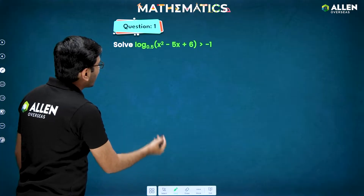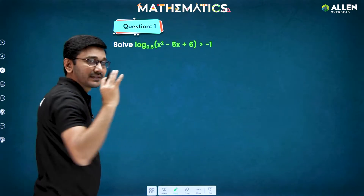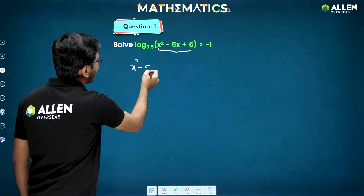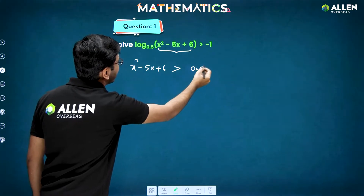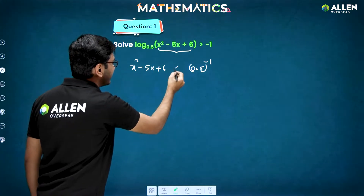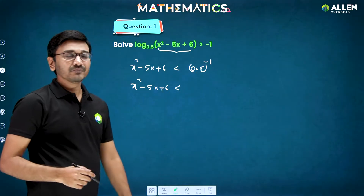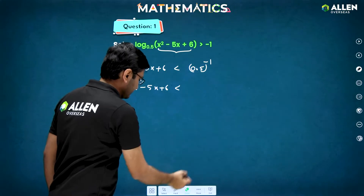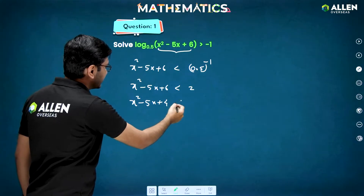First question: log of (x² − 5x + 6) to base 0.5 is greater than −1. Converting to exponential form — since base 0.5 is between 0 and 1, the inequality sign reverses. So (x² − 5x + 6) is less than 0.5 raised to −1. Since 0.5 = 1/2, we get (1/2)^(−1) = 2. Bringing 2 to the left: x² − 5x + 4 < 0.